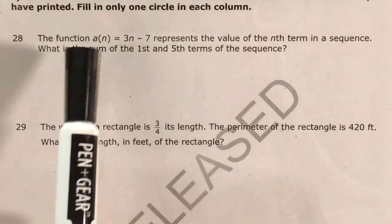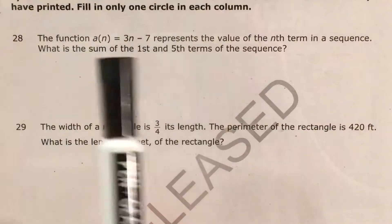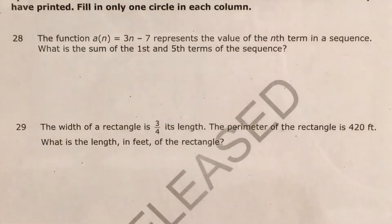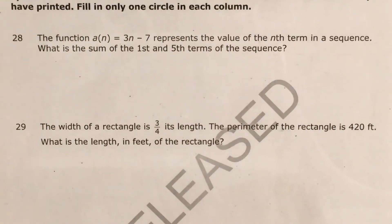The question tells us that the function a of n equals 3n minus 7 represents the value of the nth term in a sequence, and we're trying to find the sum of the first and fifth terms of that sequence.